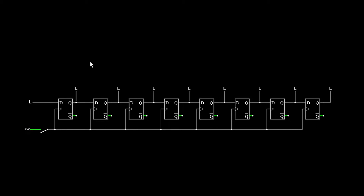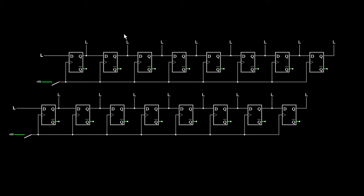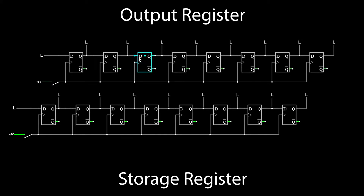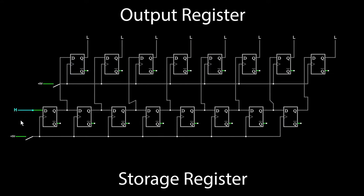The 595 chip adds another layer of complexity — instead of one set of flops, we use two. The 595 has two sets of eight flops: the bottom set is called the storage register and the top set is called the output register. Each set has its own shared clock signal, but there is only one data signal going into the storage register. Each flop in the output register is linked to its respective flop in the storage register, so pulsing the output register clock copies the contents of the storage register into the output register.